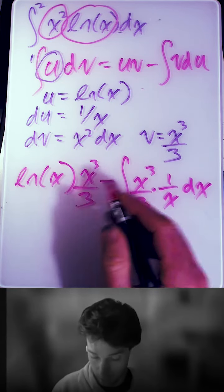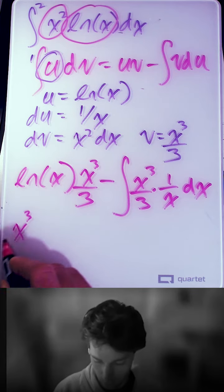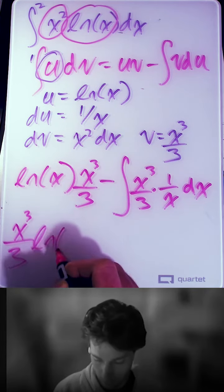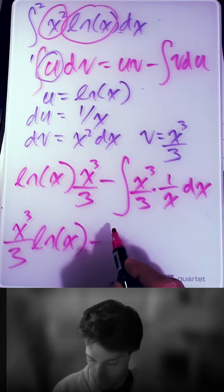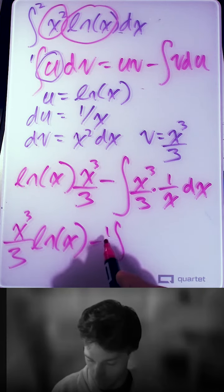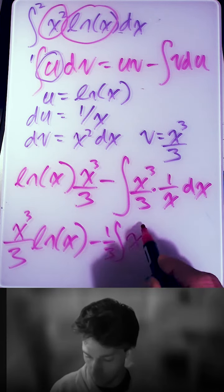So we could clean this up and call it x cubed over 3 ln of x minus the integral of one-third x squared dx.